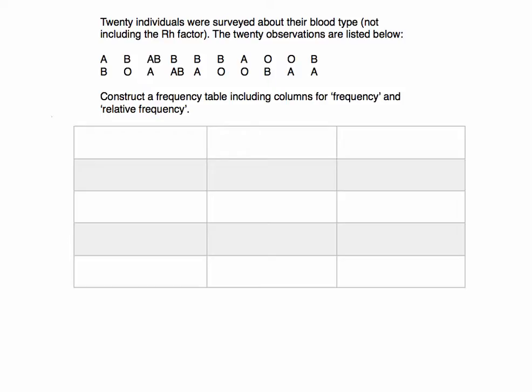What we want to do is construct a frequency table including columns for frequency and relative frequency. The first thing I'm going to do is write the titles of the columns. This would be the observation of each data value. So our first column here is going to be the observations, and we have A as a possible observation, B, AB,